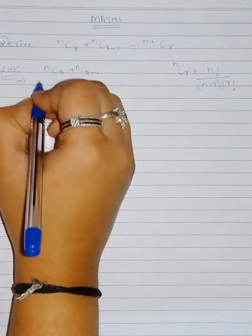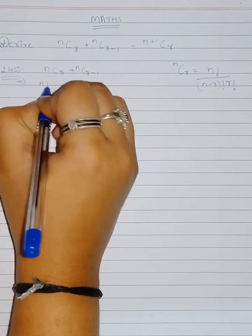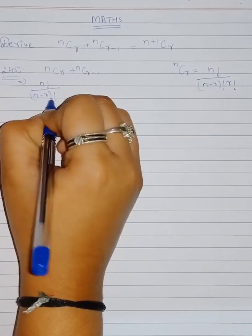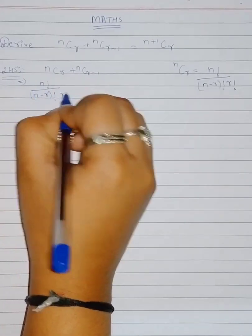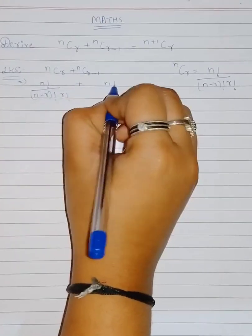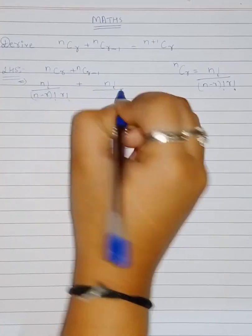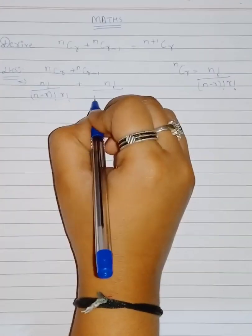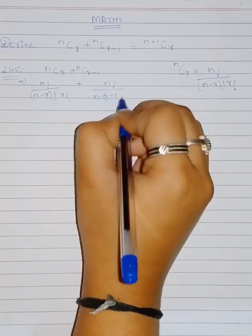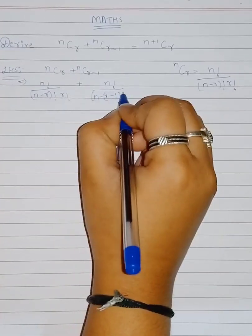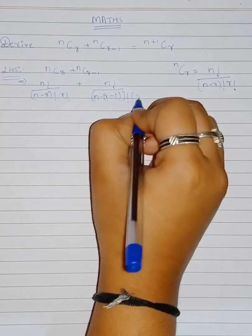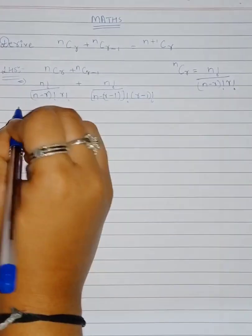Using this formula, ⁿCᵣ = n! / [(n−r)! · r!], and ⁿCᵣ₋₁ = n! / [(n−(r−1))! · (r−1)!], which is n! / [(n−r+1)! · (r−1)!].